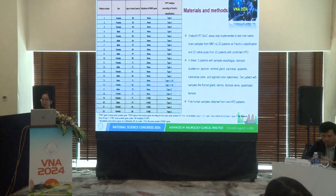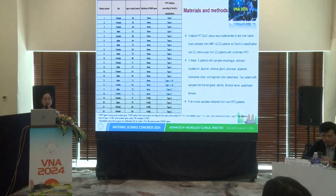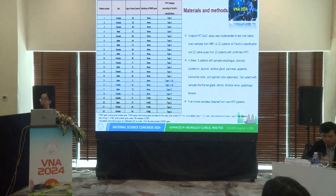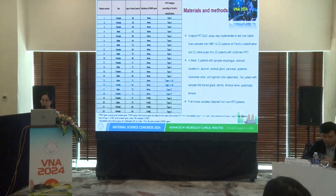In this study, we had 22 patients, 9 native prion samples, and 22 native scalp samples. Five patients provided samples from esophagus, stomach, duodenum, jejunum, adrenal gland, pancreas, appendix, transverse colon, and six more colon specimens. Two patients provided samples from thyroid, dermis, femoral nerve, and quadriceps femoris. Five human samples were obtained from non-prion disease controls.